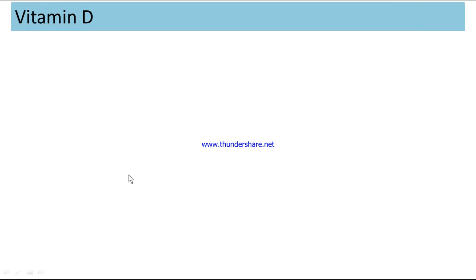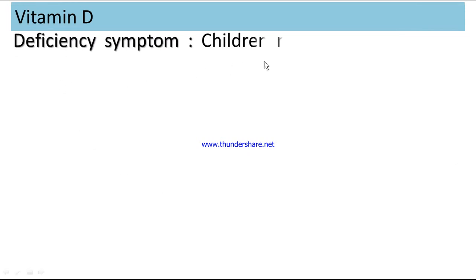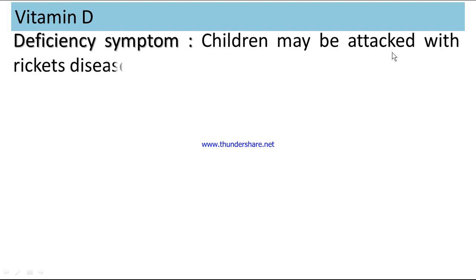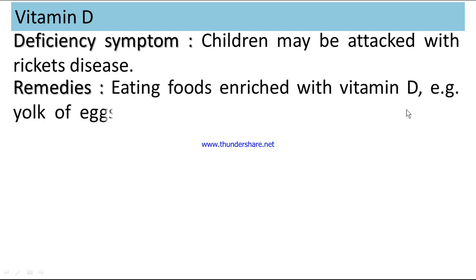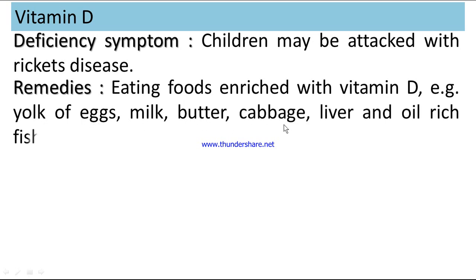Vitamin D: Deficiency symptom — children may be attacked with Rickets disease. Remedies: eating foods enriched with Vitamin D, such as yolk of eggs, milk, butter, cabbage, liver, and oil-rich fish.